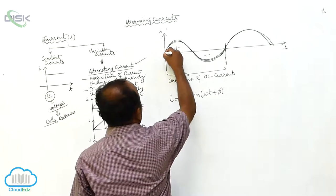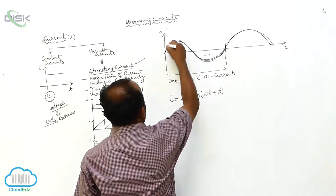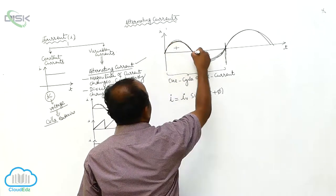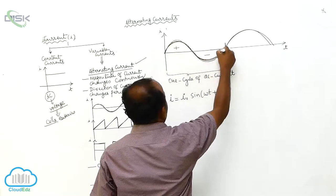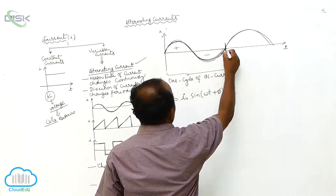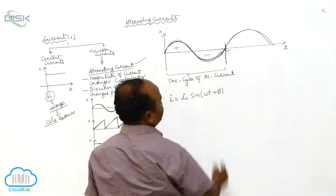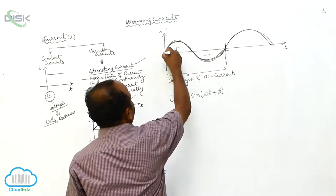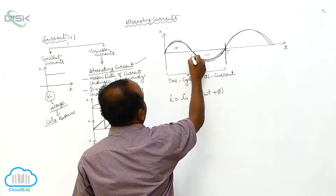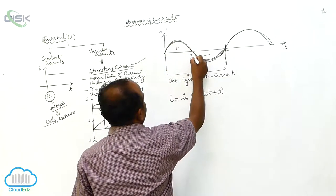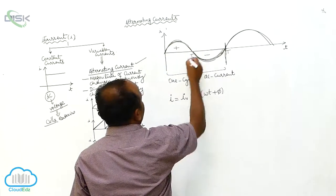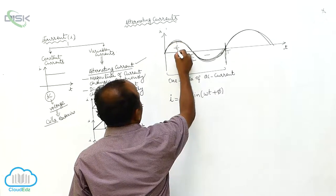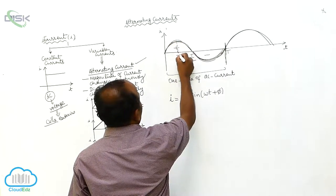Here, in this case, this is for one complete cycle — whatever the time it takes is called the period of time. For half cycle, it is called T by 2. For quarter cycle, it is called T by 4.